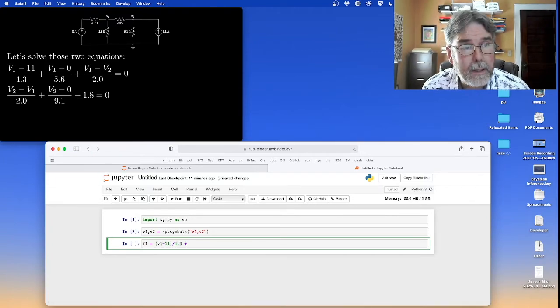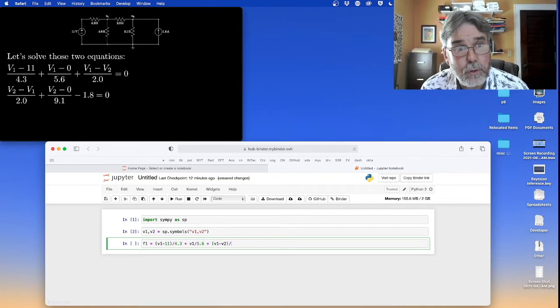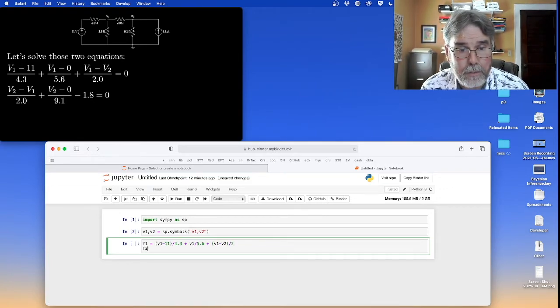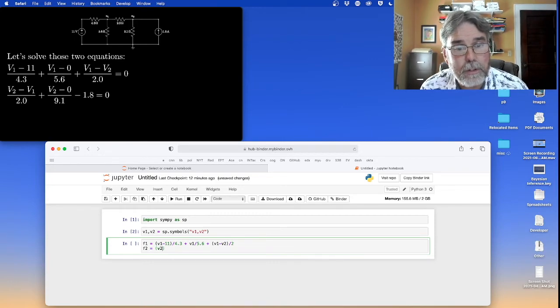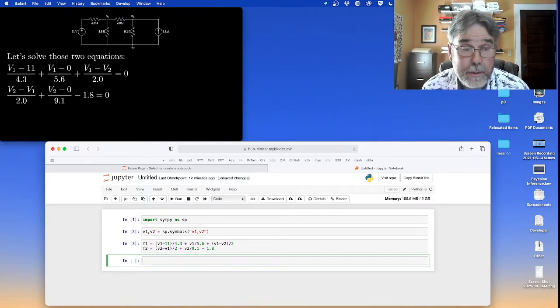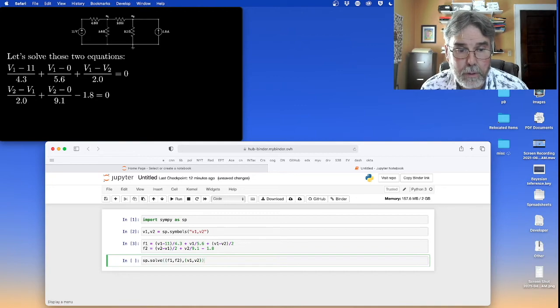Let's write these two functions. The first function is going to be v1 minus 11 divided by 4.3 plus v1 divided by 5.6. I don't need to subtract the 0 because that doesn't do anything. Then it's v1 minus v2 over 2. That's function 1. Function 2 is going to be v2 minus v1 over 2 plus v2 over 9.1 minus 1.2. So those are the two functions. They're both supposed to be equal to 0 when the equations are solved. So I can just tell SymPy to solve those two equations, f1 and f2, for the symbols v1 and v2, which I don't know.